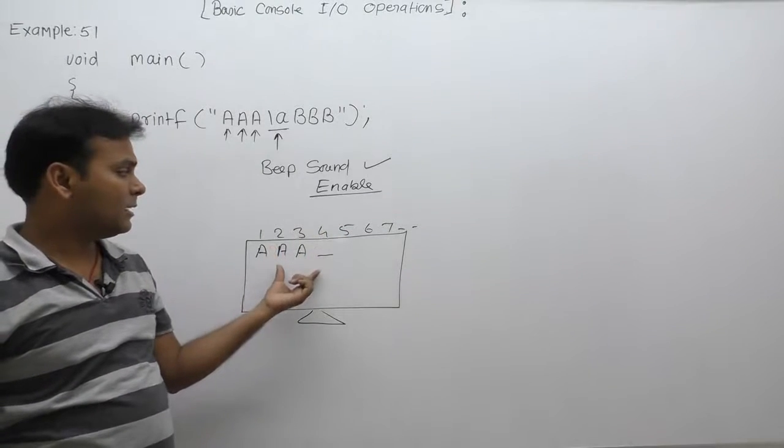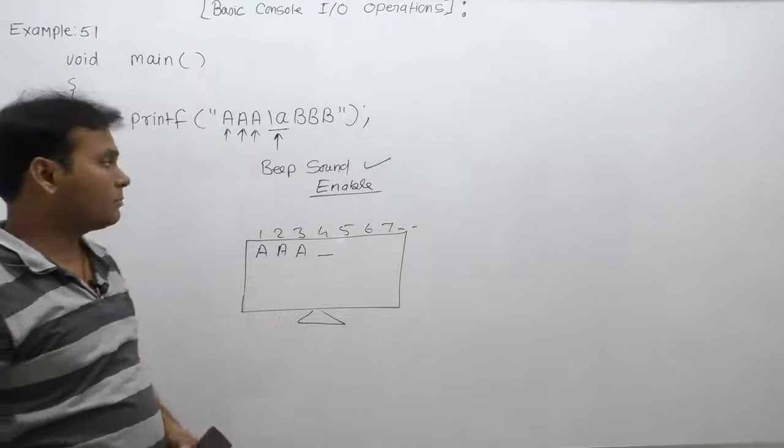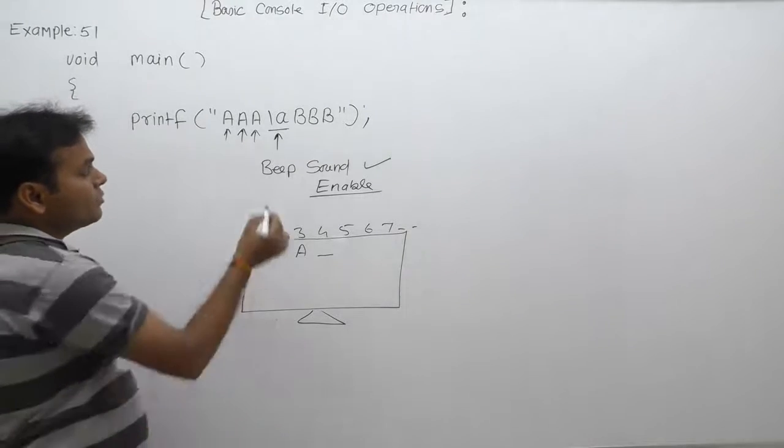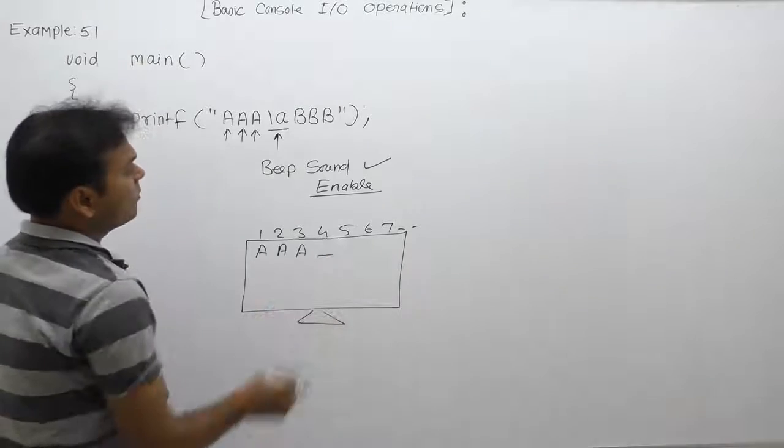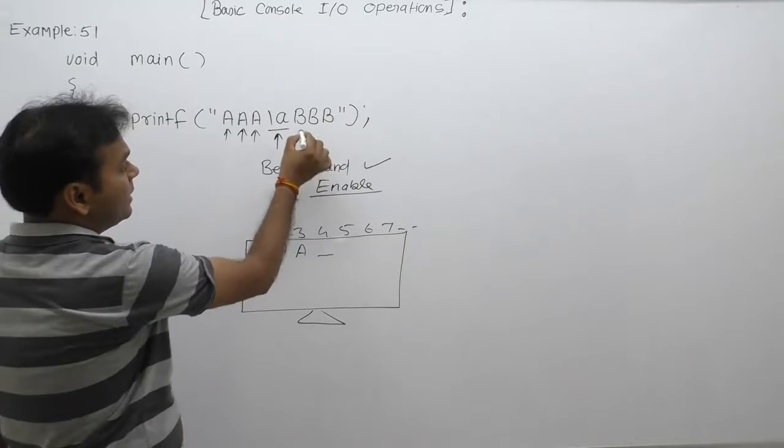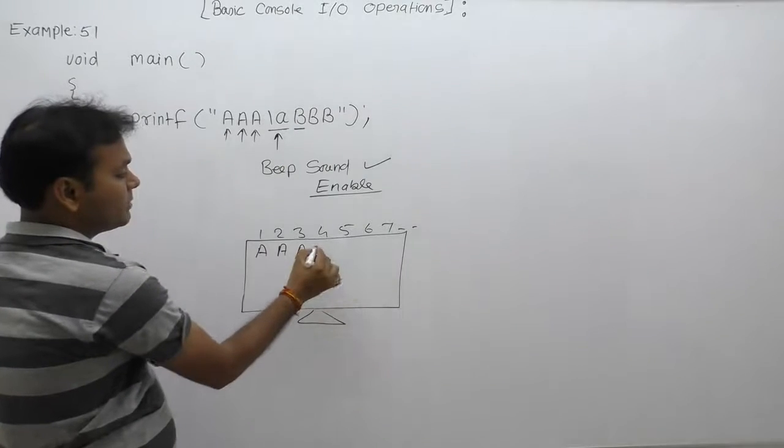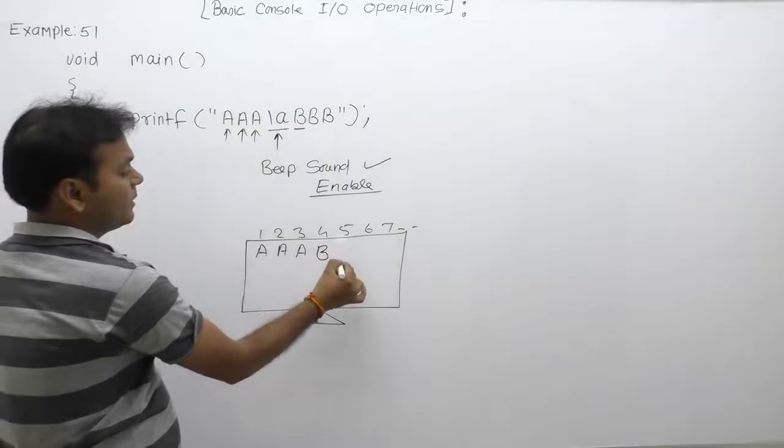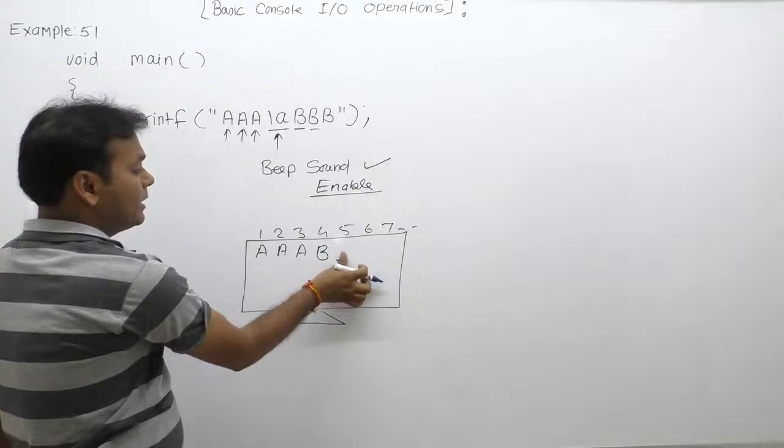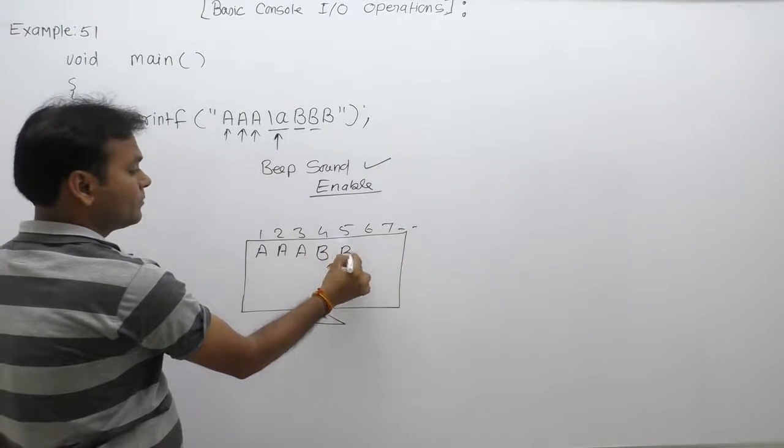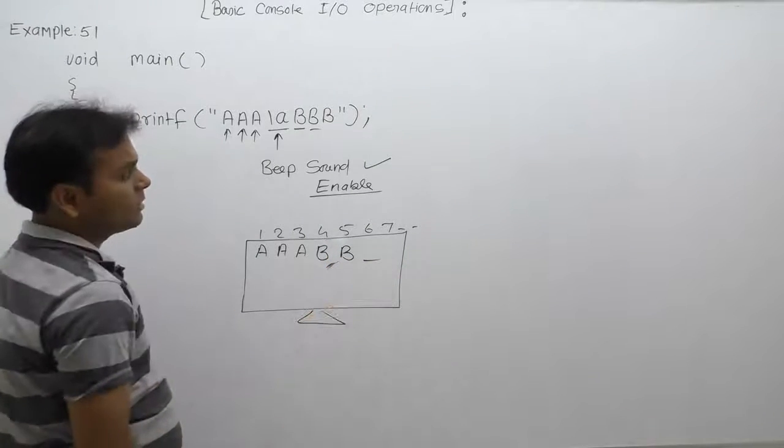If a sound device is already connected, then in this case it will simply generate some beep sound. After that, according to slash a, the position of the cursor is not changed. Next, it will print 'b' on the current position. Again, at the current place, the display character is simply 'b'.